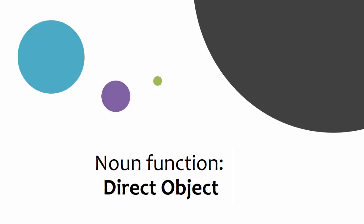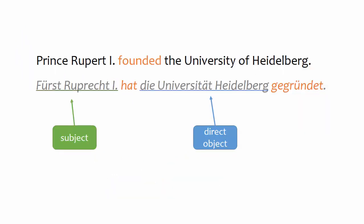After having looked at subjects in the first video, now let's look at direct objects. As mentioned in the first video in this series, it's a good idea to locate the verbs first when trying to understand the meaning of a sentence. Those are marked in orange on your screen. You can tell that these sentences are in the active because of the verb formation — hat gegründet — which is an active verb construction. Most textbooks will say that the subject does the action and the direct object is the person or thing the subject does the action to. In a minute I'll tell you why that explanation needs modification, but for now let's stick with it.